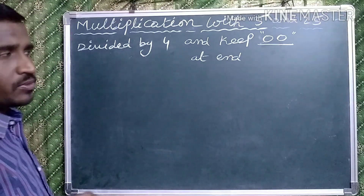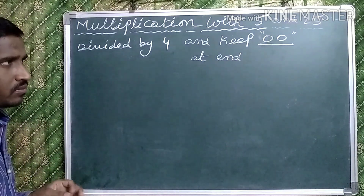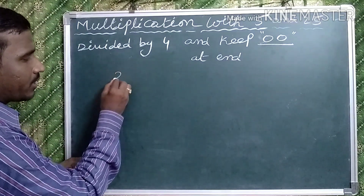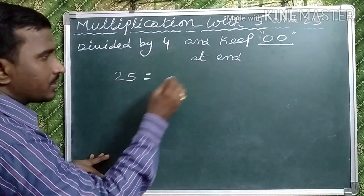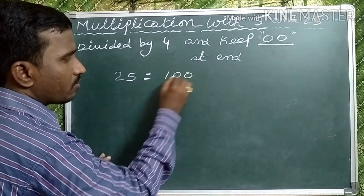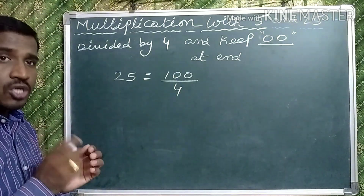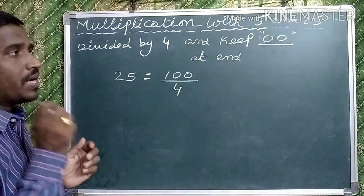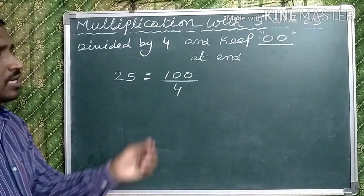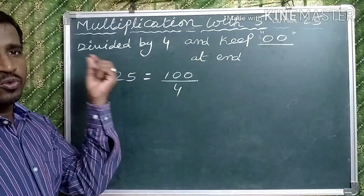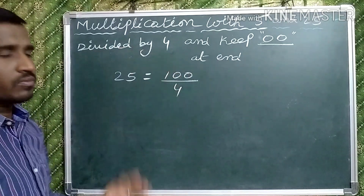Now observe multiplication with 25. Suppose take 25 — 25 can be written as 100 by 4. That's why in the case of multiplication with 25, in the shortcut method, keep 2 zeros at the end and divide by 4.